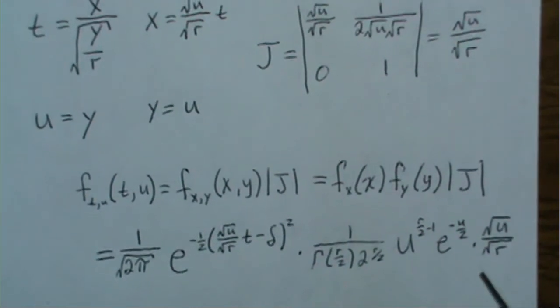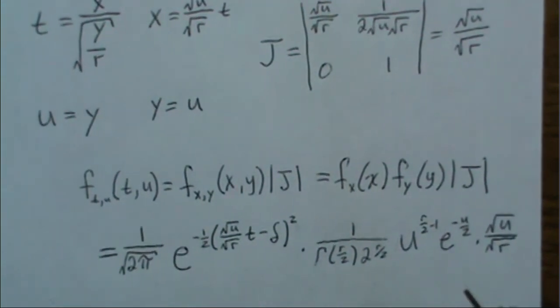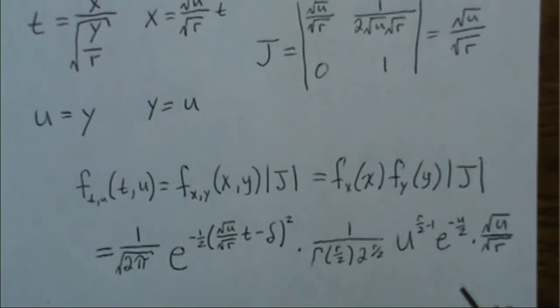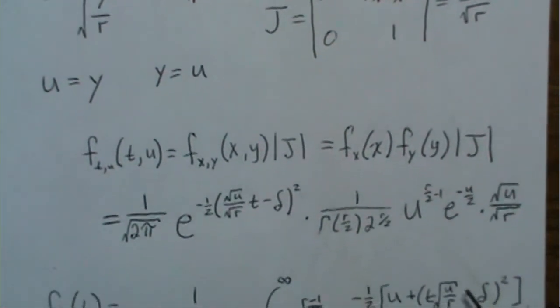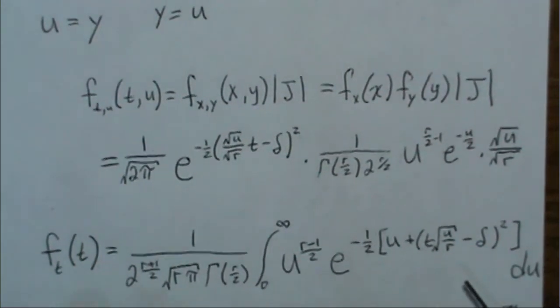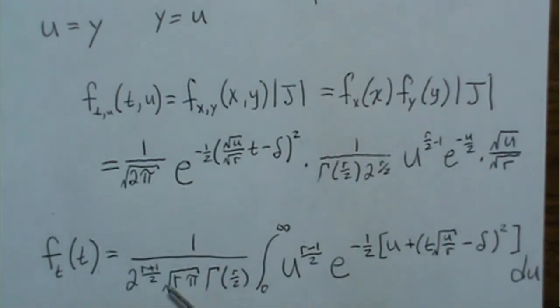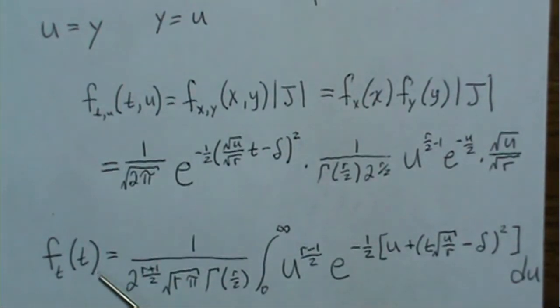So we could then simplify this, but it would be very similar to what we did in the central t distribution. So I'm going to go straight to integrating out the u. So the density of a non-central t distribution, we move all the constants out. So that's everything without a u, and what is left over is this.